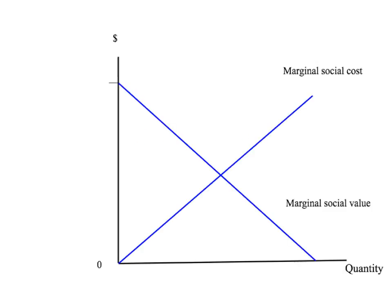Let's take an abstract example — pick a product. On the vertical axis we have dollars, on the horizontal axis we have the quantity. We have our downward sloping marginal social value curve and our upward sloping marginal social cost curve. Let's pick the third unit of production of this product and ask a question.